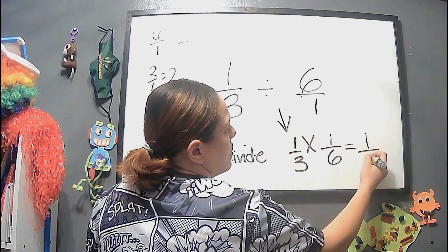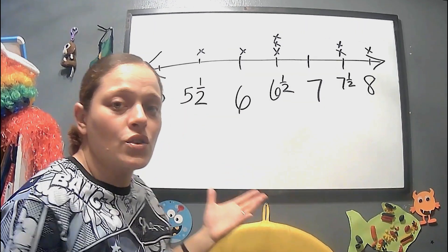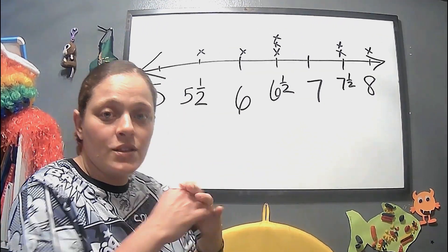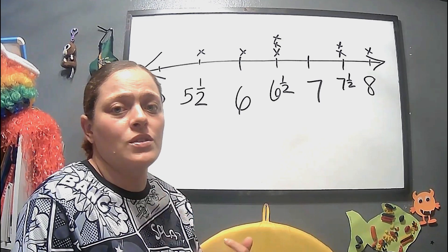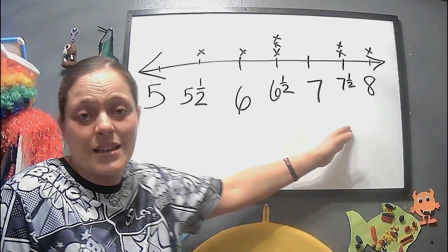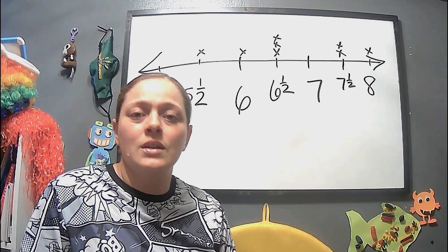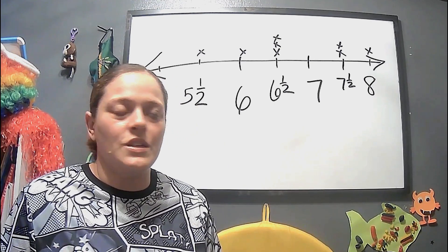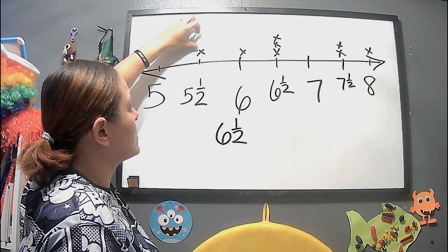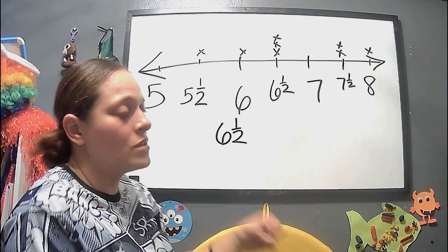That gives us 1 over 18. Now we have a number line: 5, 5 and a half, 6, 6 and a half, 7, 7 and a half, and 8. A number line is just numbers on a line — they use it for decimals, fractions, mixed numbers, and questions like this. A line plot means plotting the amount of data points. Be sure to look out for the next video where we go over decimals and division.